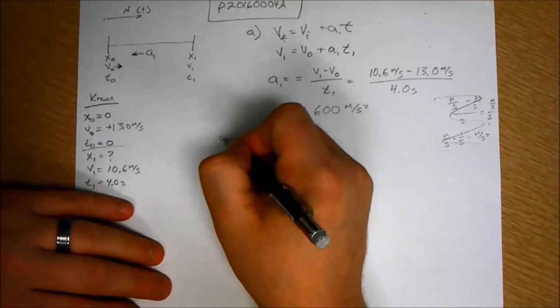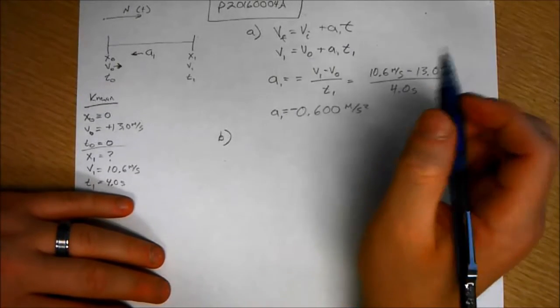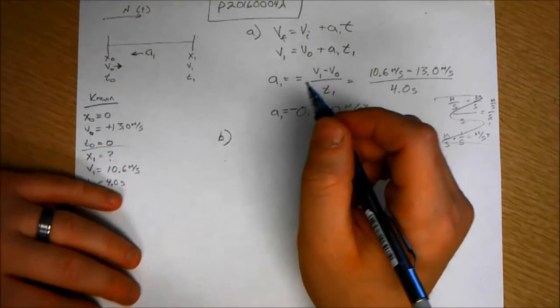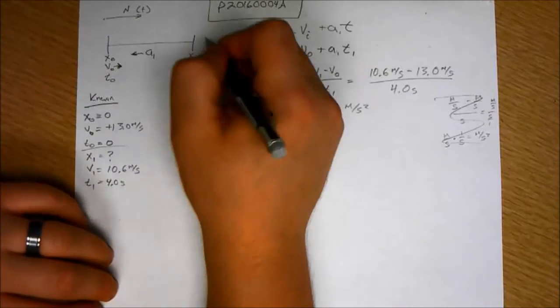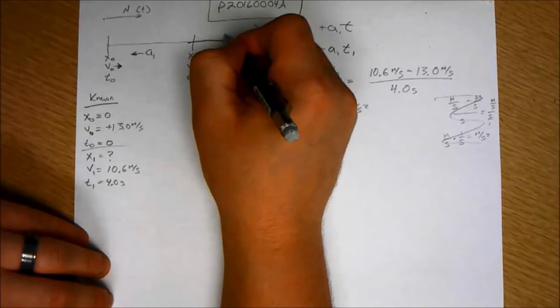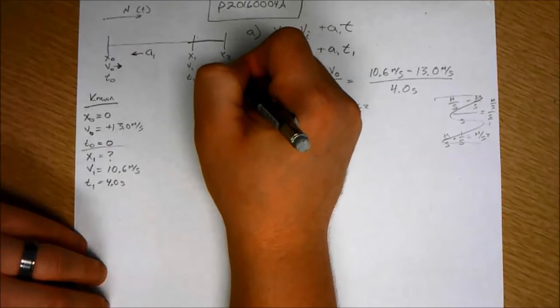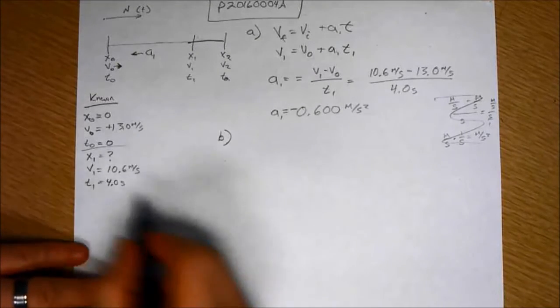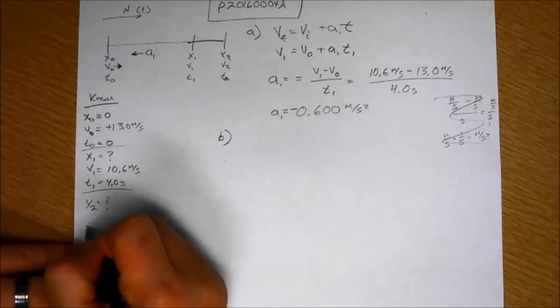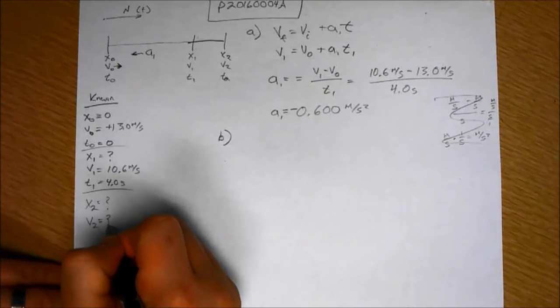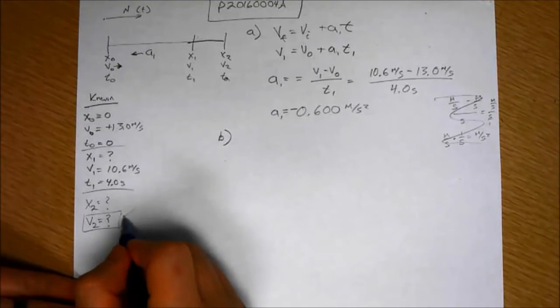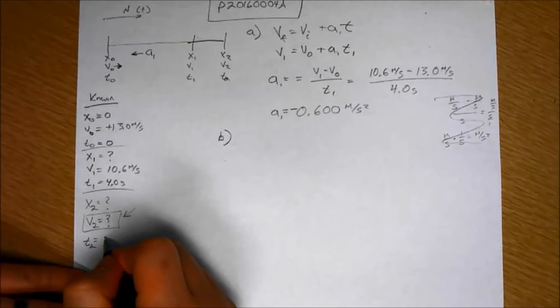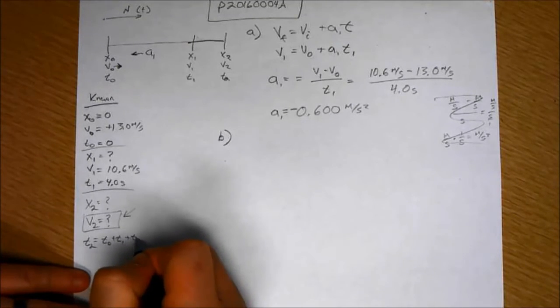So then part B says, assuming that the acceleration remains the same, what is the bird's velocity after an additional two seconds? So now I have to add this other segment element on there and say this is X2, V2, T2. X2 equals we don't know. V2 equals we also don't know, but we're looking for that.